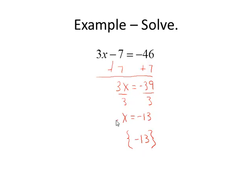Now, if I were to check it, I would take that value back to the original equation, plug it in for x, and make sure the left side was equal to the right side. 3 times negative 13 is negative 39, minus 7 is negative 46, so this checks. From here on in, I'll leave the check to you.